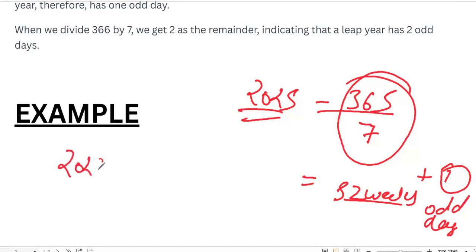And when there is a leap year like 2028, the days will be 366. When you will divide by 7, you will get 52 weeks plus 2 odd days. Now this concept is very important.